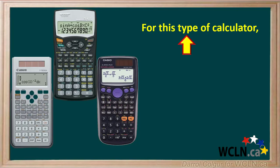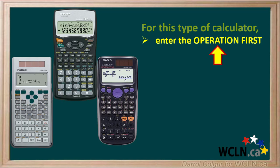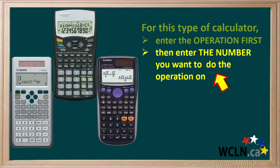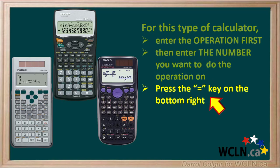For this type of calculator, you must enter the operation first, for example the square root or the cube root. Then enter the number you want to do the operation on. To finish up, press the equals key on the bottom right of the keyboard. Your answer will be displayed on the screen.